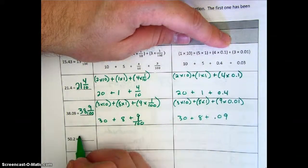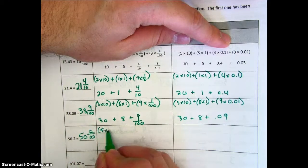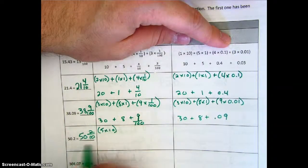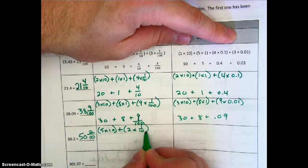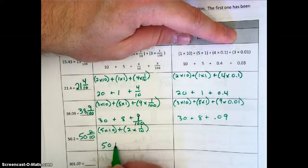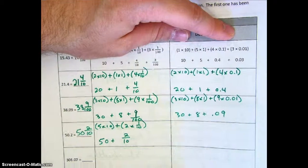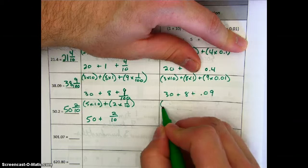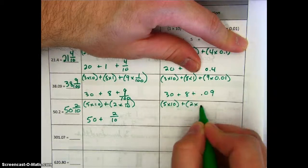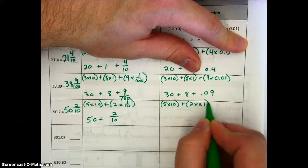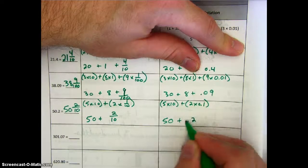Moving on to fifty and two tenths. We only need to do five times ten. We have a zero in the ones place, so then we move on to the tenths place. We can see that we have fifty plus two tenths. And then moving on to decimal notation, it looks like: fifty plus two tenths.